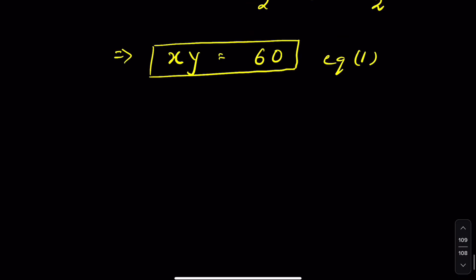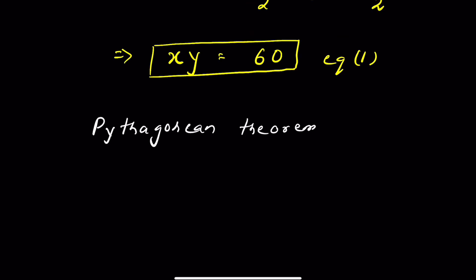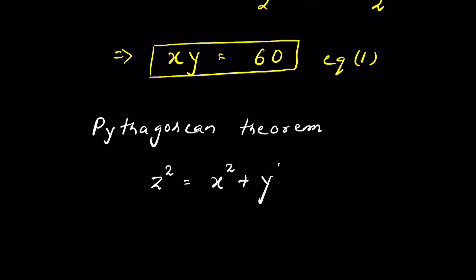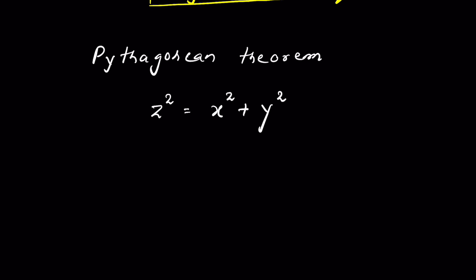Now as per the Pythagorean theorem, the square of the hypotenuse is equal to the sum of squares of the other two sides. That is, Z squared is equal to X squared plus Y squared.